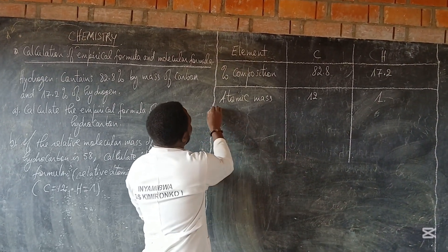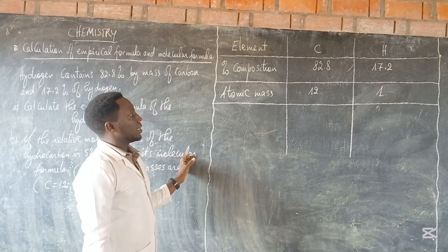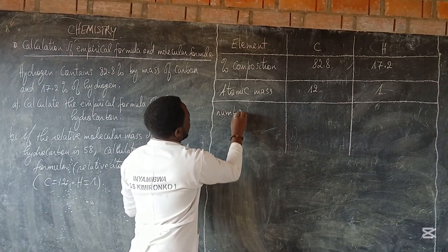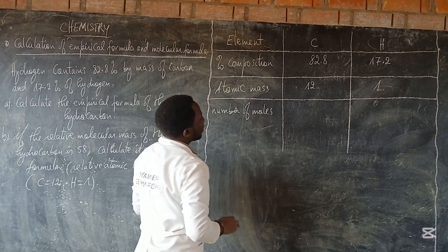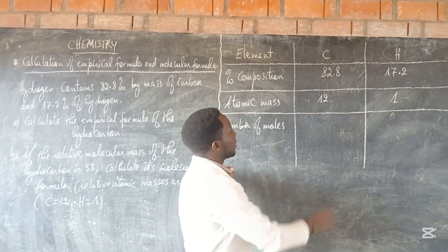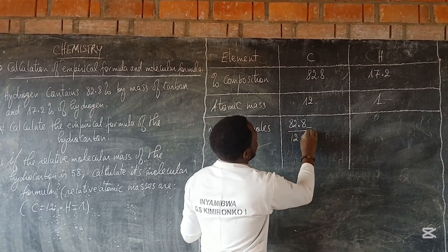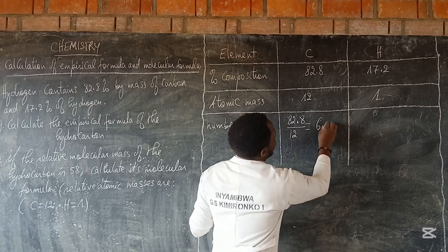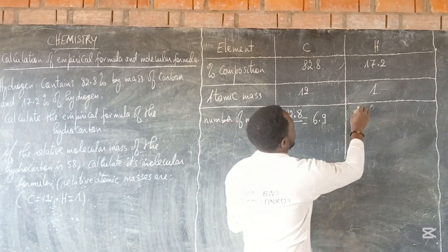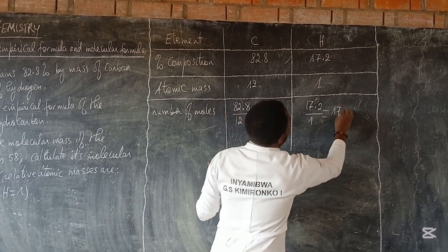The first thing that we have to calculate is the number of moles of each atom. To get the number of moles, we take the given percentage and divide by the atomic mass. For carbon, we take 82.8 divided by 12. The answer is 6.9. Remember to use your calculator to get this answer. For hydrogen, we take 17.2 over 1, and the answer is 17.2.